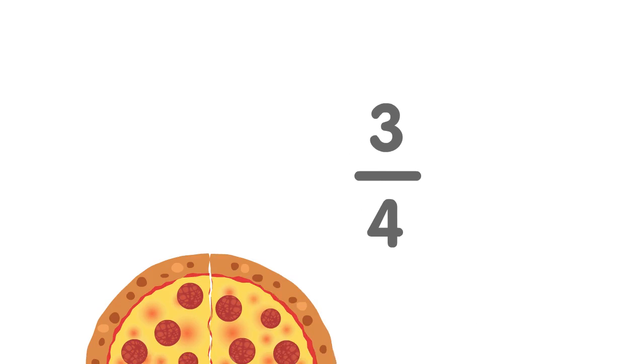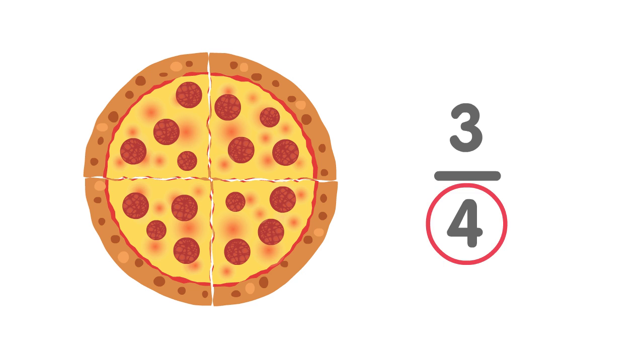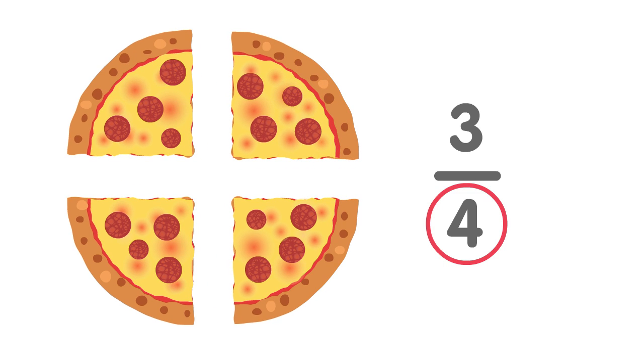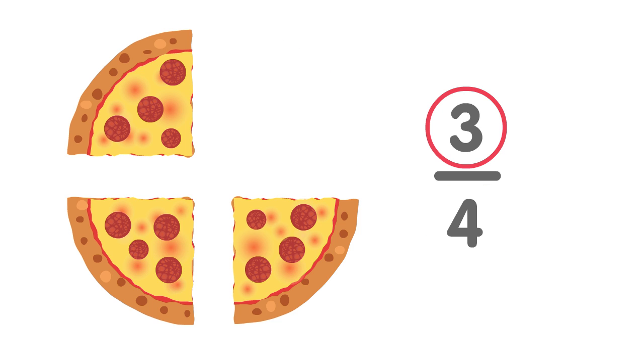We write fractions like this. This is three quarters. The bottom number tells us how many parts we divide the whole number into. We call this the denominator. And the top number tells us how many parts we have. This is the numerator.